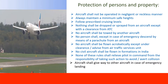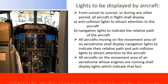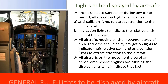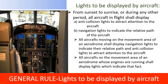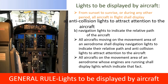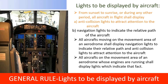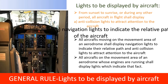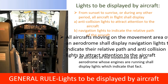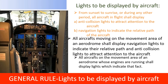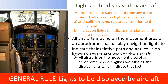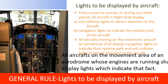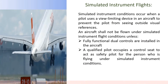Aircraft shall give way to other aircraft in case of emergency landing. Regarding lights to be displayed: from sunset to sunrise, or during any other period, all aircraft in flight shall display anti-collision lights to attract attention to the aircraft and navigation lights to indicate the relative path of the aircraft. All aircraft moving on the movement area of an aerodrome shall display navigation lights and anti-collision lights. All aircraft on the movement area whose engines are running shall display lights indicating that fact.